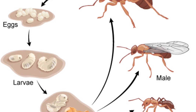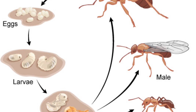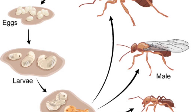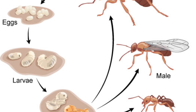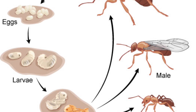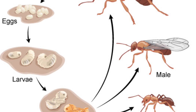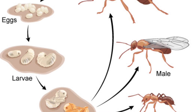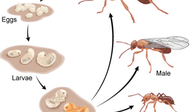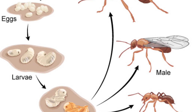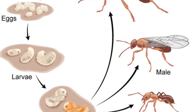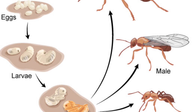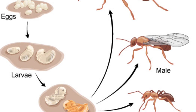Most larvae will grow into worker ants. However, in developed colonies, larvae fed more food may develop into majors or even winged princesses for the next generation and the next year's nuptial flights.